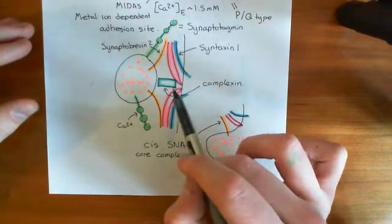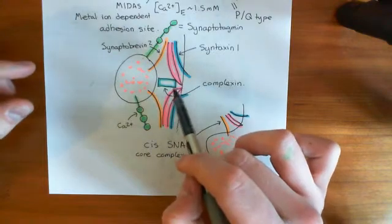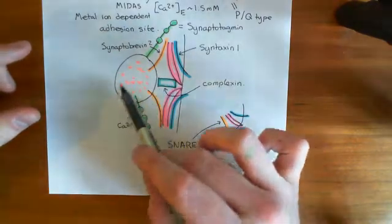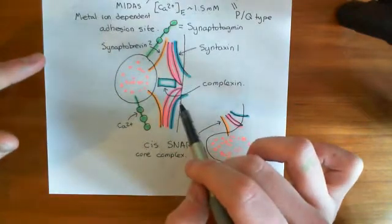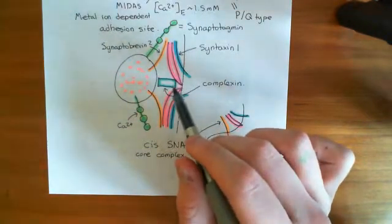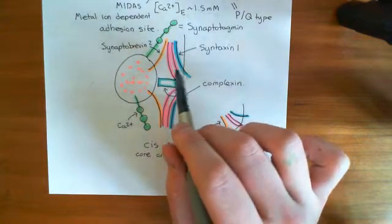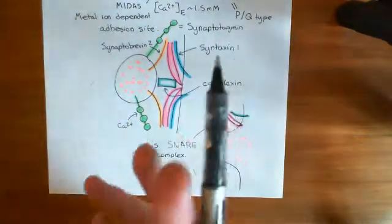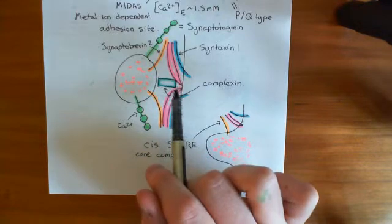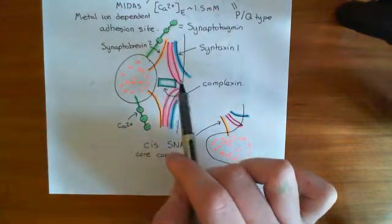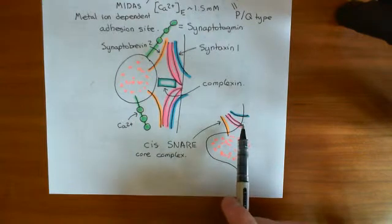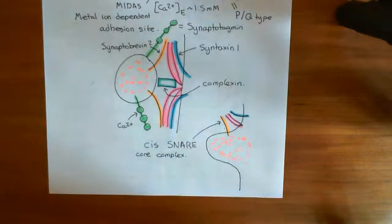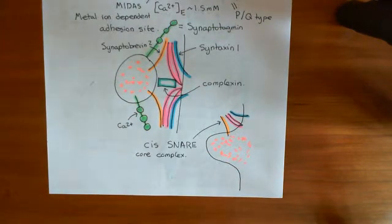In the clamp theory, activating synaptotagmin removes the clamp protein complexin, which was preventing the vesicle membrane from getting too close to the plasma membrane. Once complexin has been removed, the trans-SNARE core complexes can tighten, pulling the two membranes together and causing them to fuse, resulting in a cis-SNARE core complex forming. That's how calcium entry through N-type or PQ-type voltage-gated calcium channels causes release of the readily releasable vesicle pool.